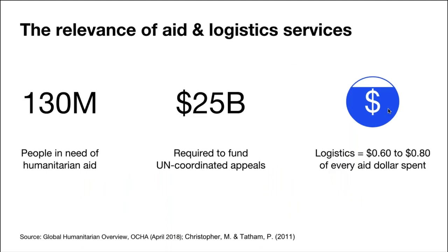Why are we here today? There are over 130 million people in need of humanitarian aid, and many more who daily suffer the challenges of poverty or other crises. For UN coordinated appeals alone, we need 25 billion dollars to fund programs for people in need. Why is logistics important? 60 to 80 percent of those 25 billion dollars get spent on logistics every year. Today we hope to share advice that enables you to save money and time to make sure goods reach the people that really need them.